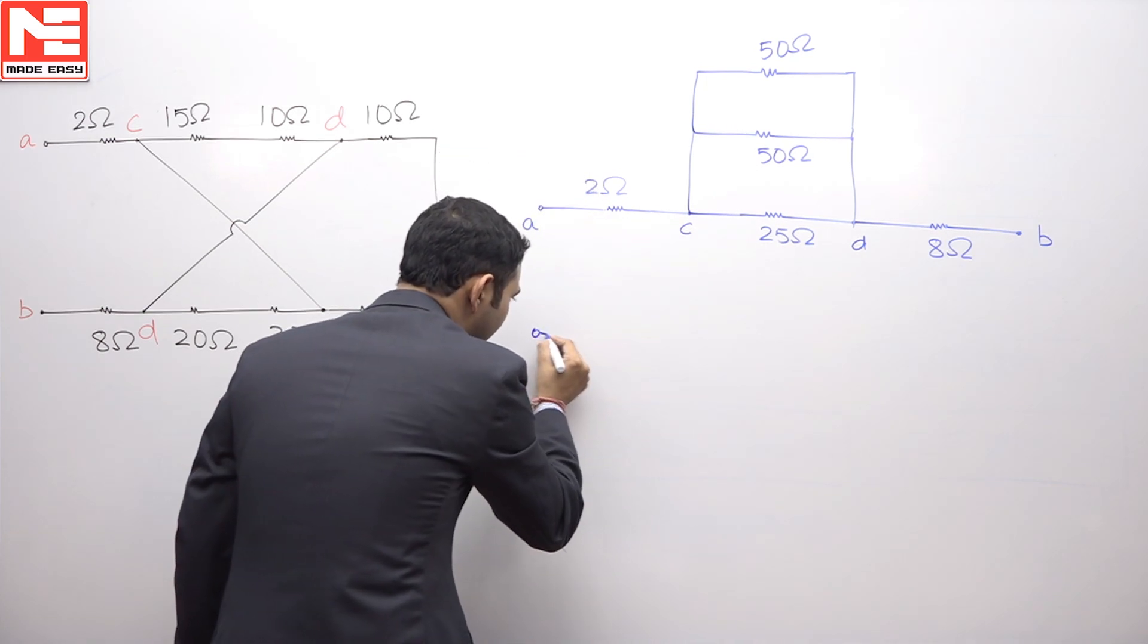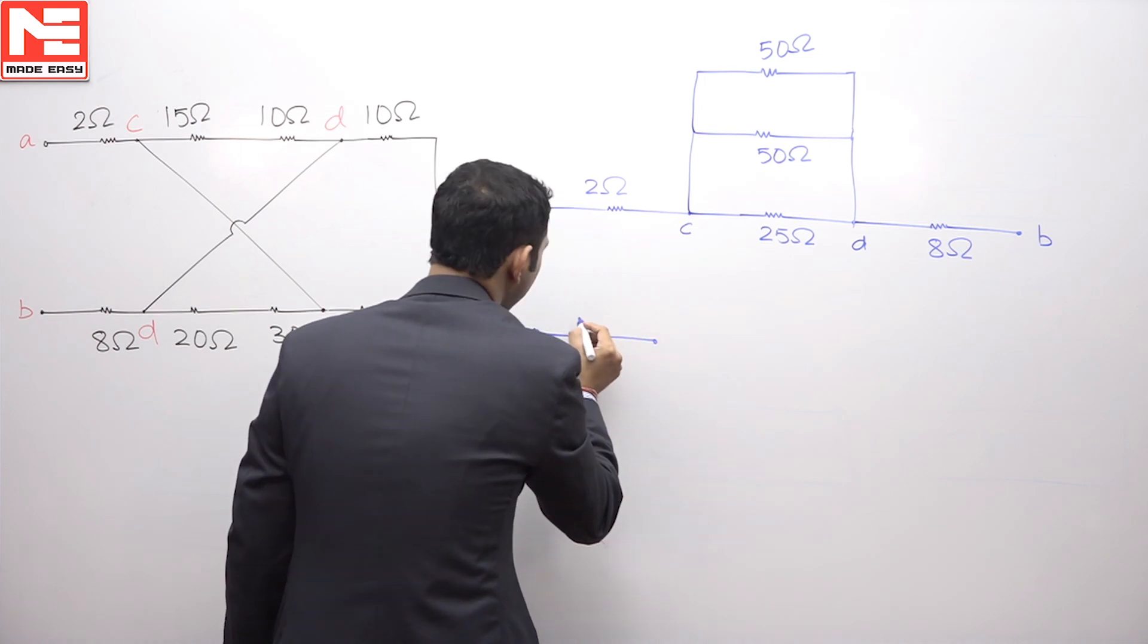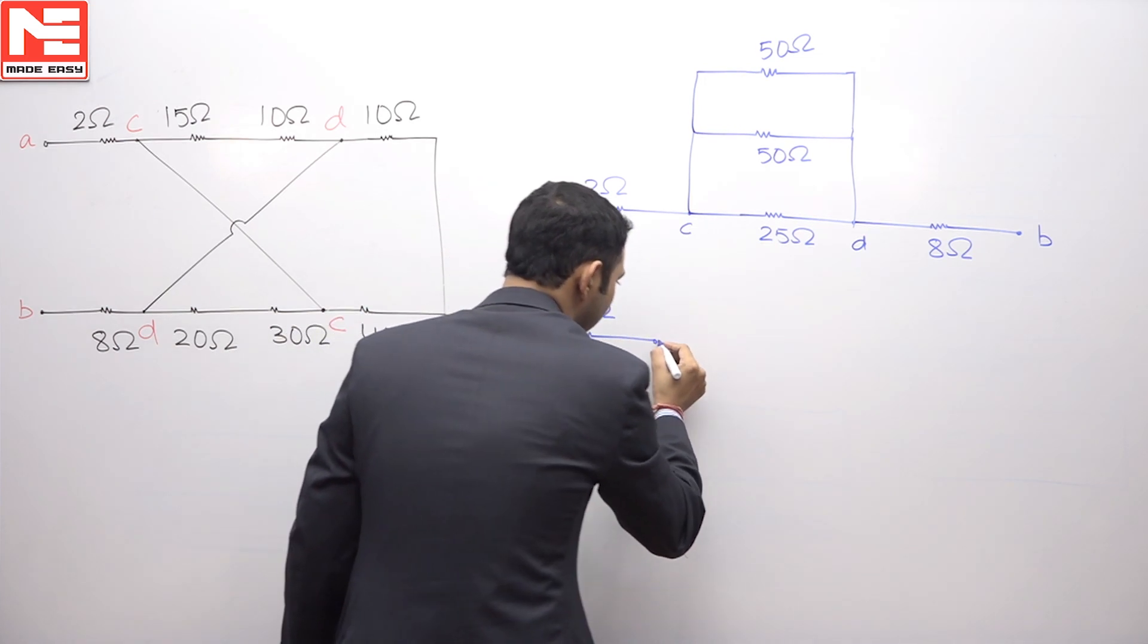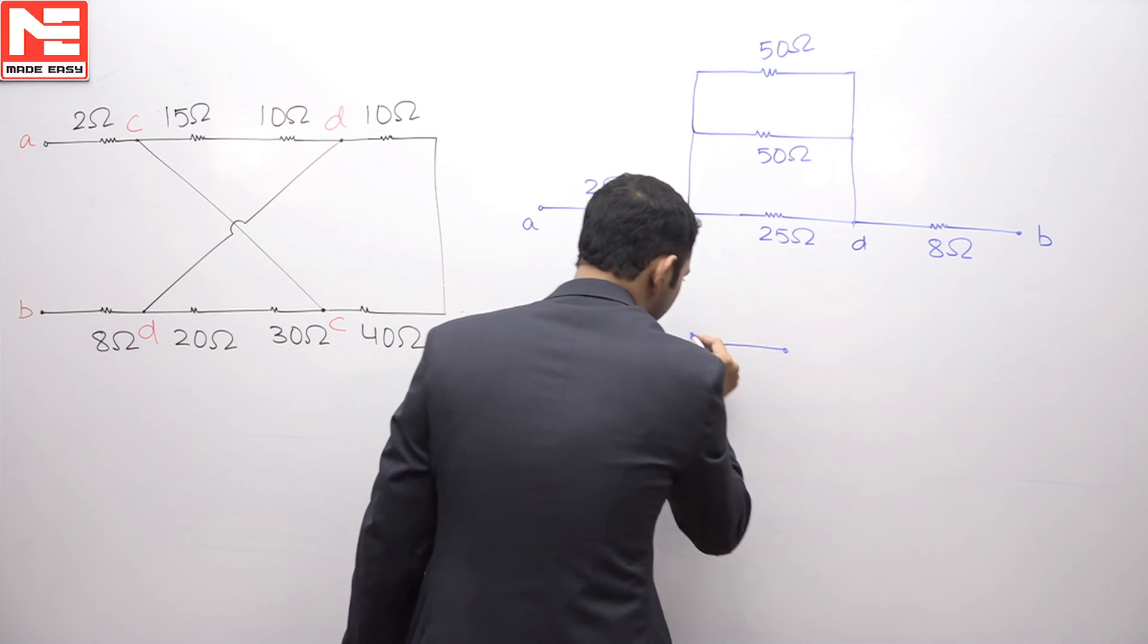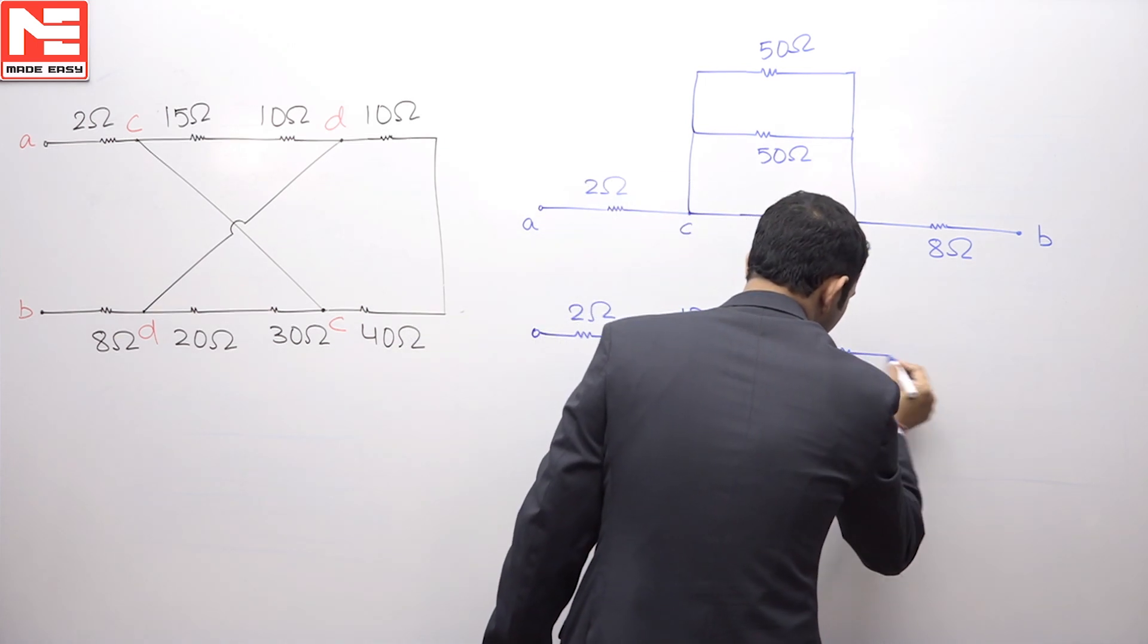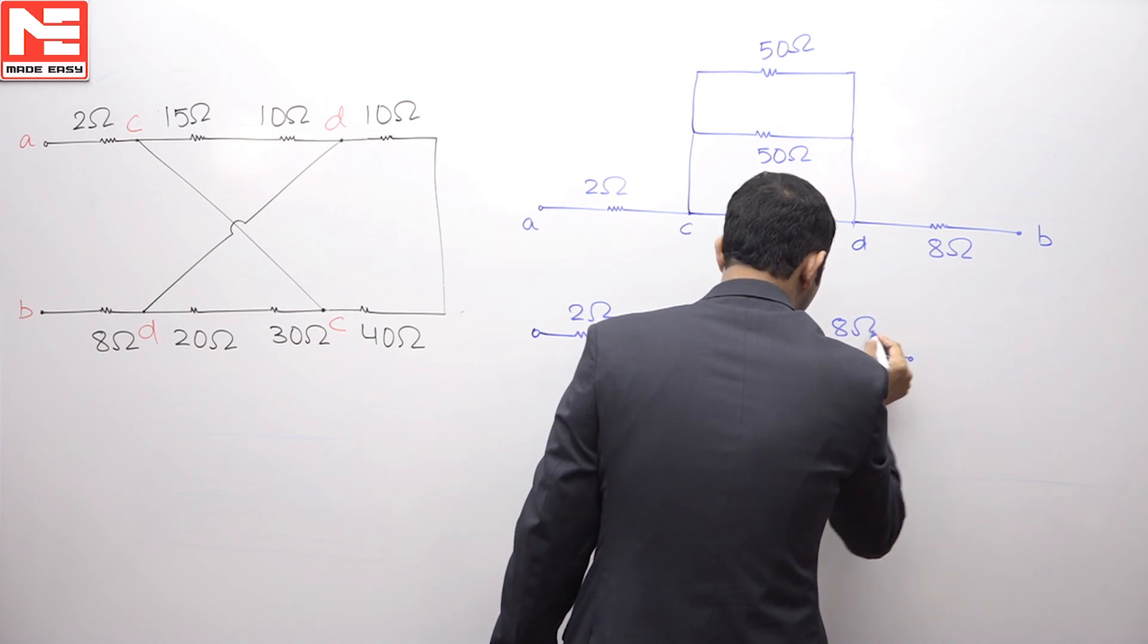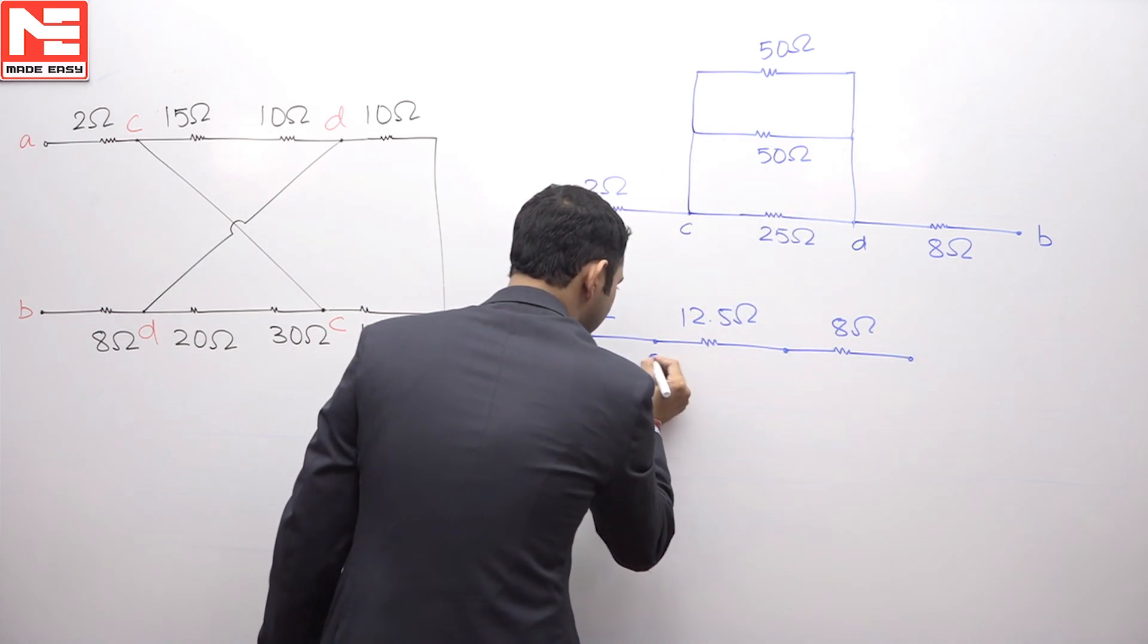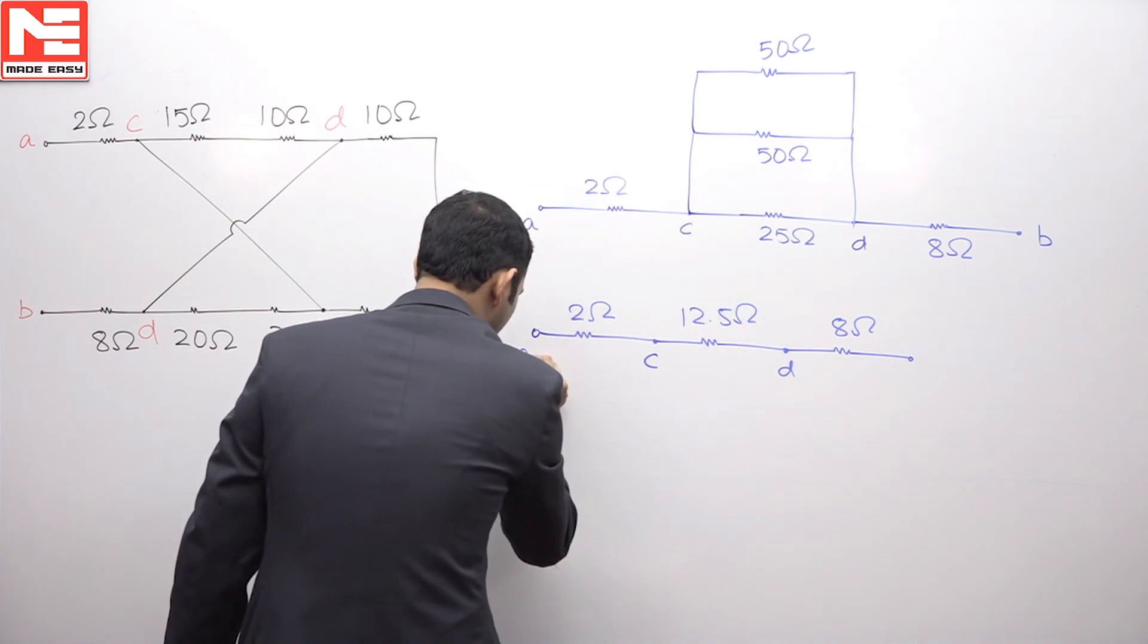2 ohms, this is 12.5 ohms, this is 8 ohms. This was the terminal C, point D, A and B.